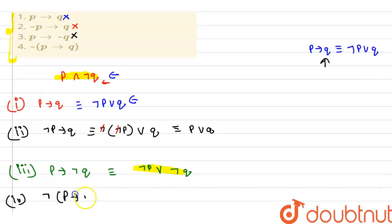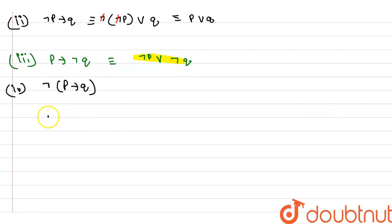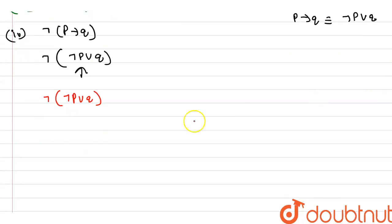Now we check option four: negation of p implies q. By the formula p implies q equals negation p or q, this is equivalent to negation of negation p or q. We now apply De Morgan's law to simplify further.